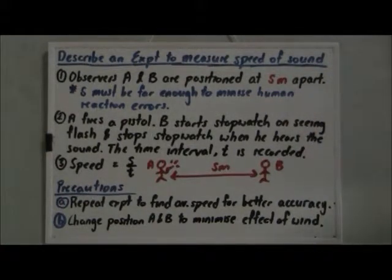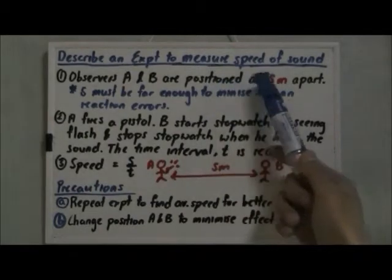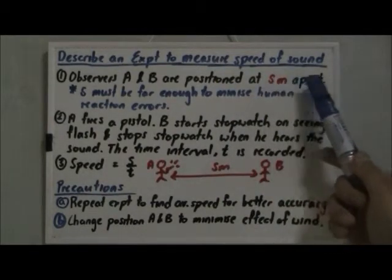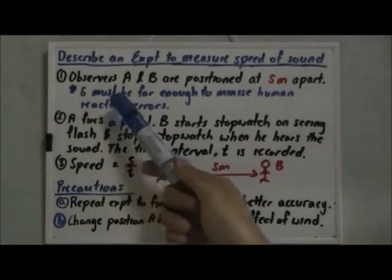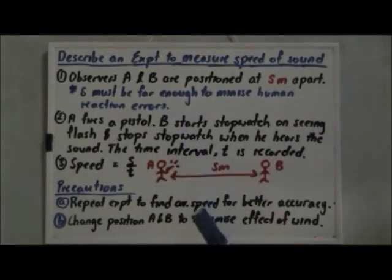So what do you have to do in order to measure the speed of sound in the air? First of all, you need to have two observers, A and B. And they have to be positioned at S meter apart. And make sure that S must be far enough so as to minimize human reaction error.